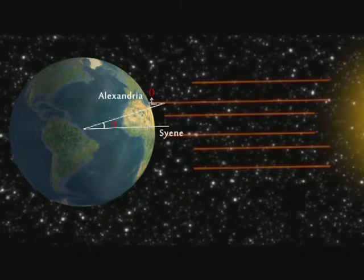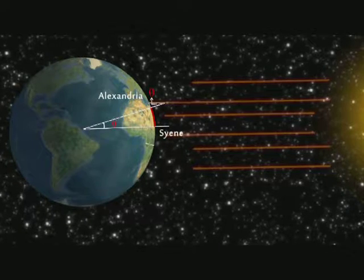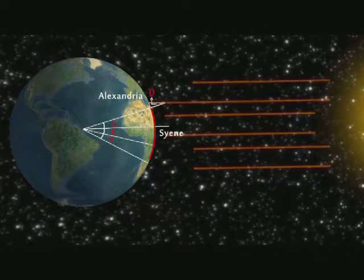Now, if we can figure out this angle and the distance between Syene and Alexandria, we can work out the circumference of the earth.